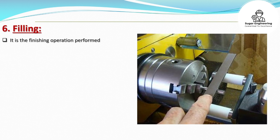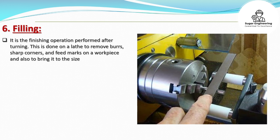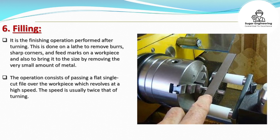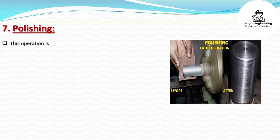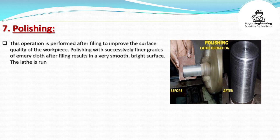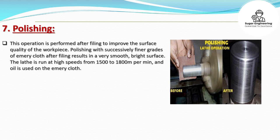Filing is the finishing operation performed after turning to remove burrs, sharp corners, and feed marks, and to bring the workpiece to size by removing a very small amount of metal. A flat single-cut file is passed over the revolving workpiece at a speed usually twice that of turning. Polishing is performed after filing to improve surface quality, using successively finer grades of emery cloth to achieve a very smooth, bright surface. The lathe is run at high speeds of 1500 to 1800 m per min, with oil applied to the emery cloth.